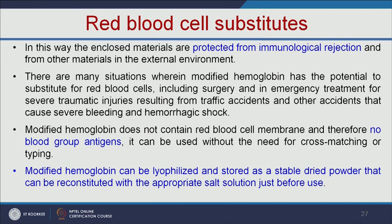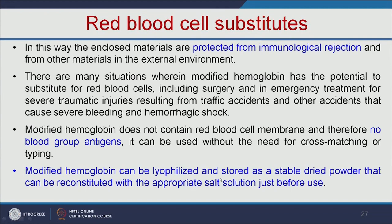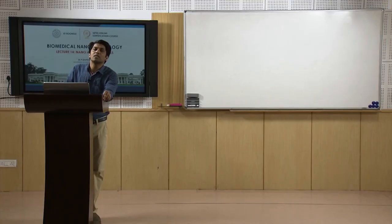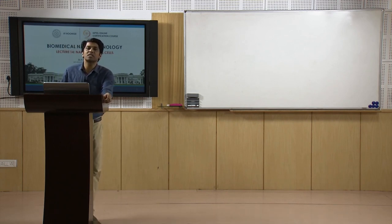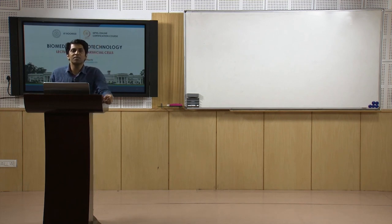These RBC substitutes are made of polymers and have no blood group antigens on the surface, so this artificial RBC can be given to any person — whether they have blood group A, B, or O — with no restriction. Another advantage is that this modified hemoglobin can be lyophilized and stored as a stable dried powder, which can be reconstituted with the appropriate salt solution just before use. Normal RBCs can be stored for only 42 days, but artificial RBCs can be stored for several months or even years because we can lyophilize the polymeric RBC and dissolve the lyophilized powder in saline when needed.